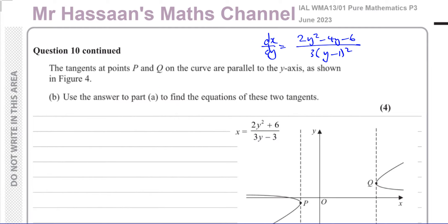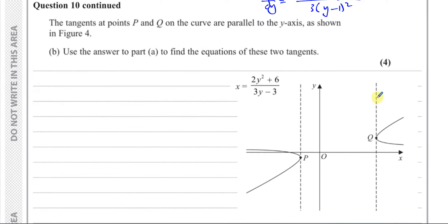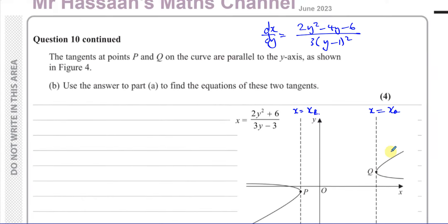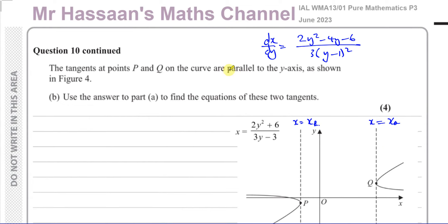For part b, the tangents at points P and Q on the curve are parallel to the y-axis — so they are vertical lines. The equations of these vertical lines will be x equals the x-coordinate of P and x equals the x-coordinate of Q. Since vertical lines are parallel to the y-axis, their gradient is undefined.